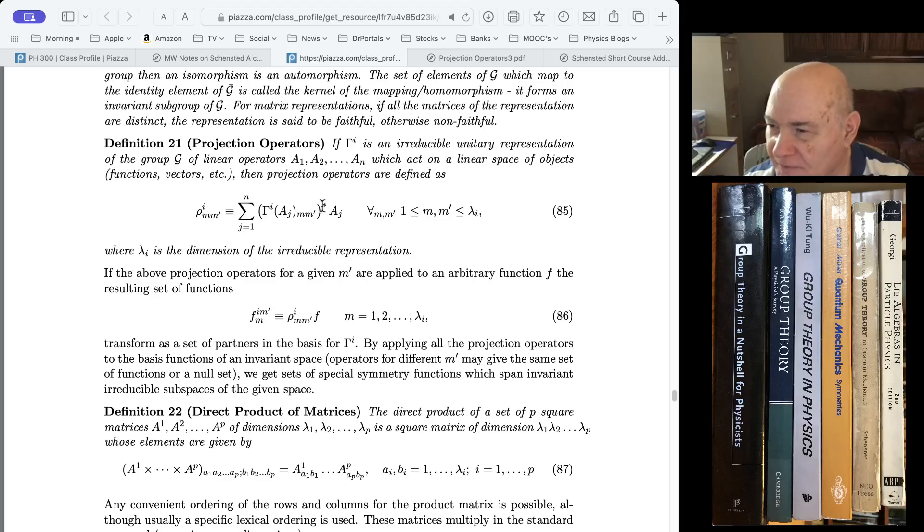This won't factor into us because all of our things are real, but they're also unitary representations. So we're going to apply this formula, and then multiply it by the group operator.